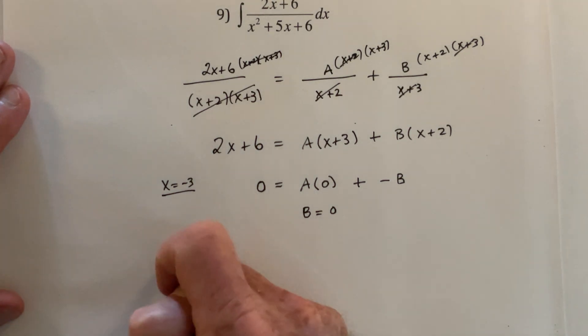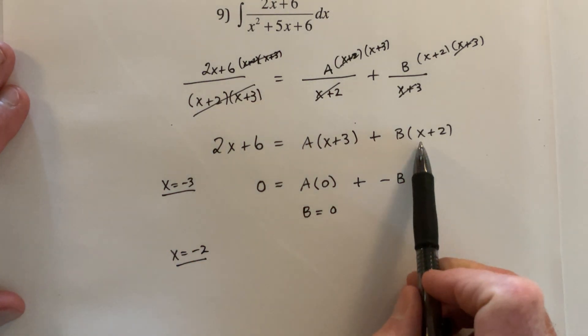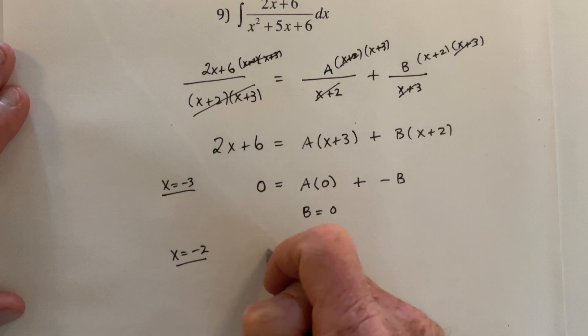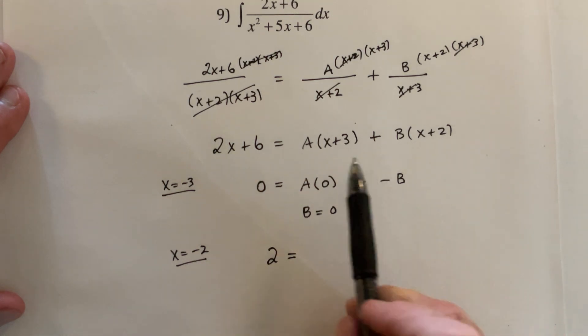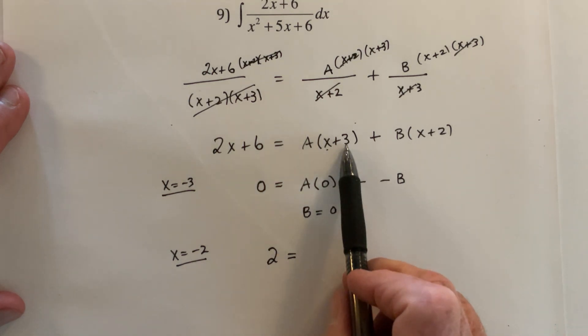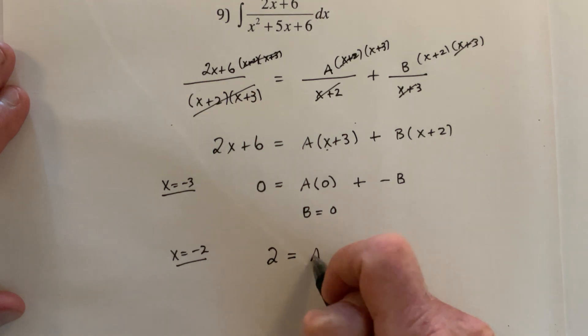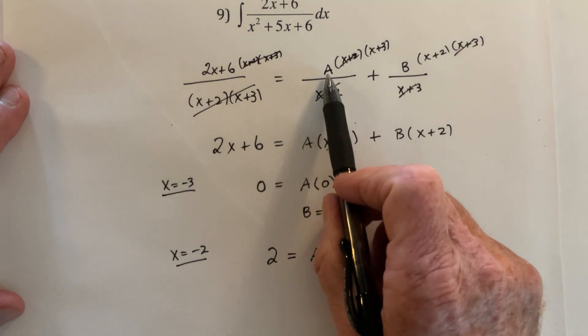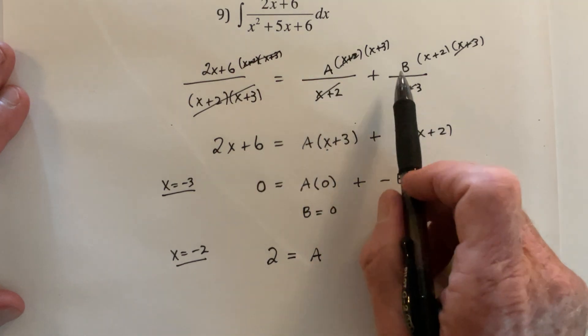All right, now I go and pick like x equals a negative 2, because that would make this one simple. If you plug in a negative 2 right here this is going to be 0. So if you substitute a negative 2, this is going to be negative 4 plus 6, that's 2. And if you put a negative 2 plus 3, that's just a 1, so that means it's A times 1. So 2 equals A.